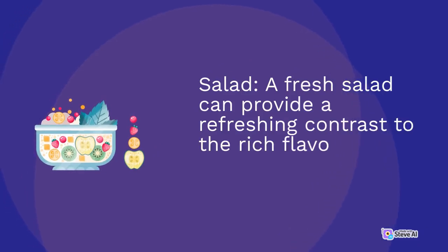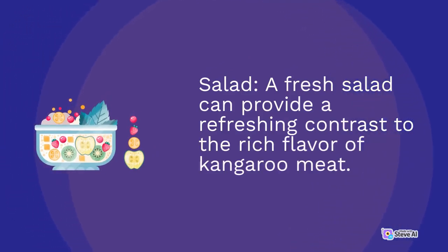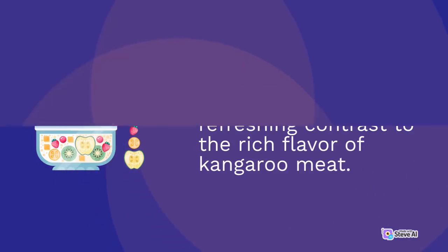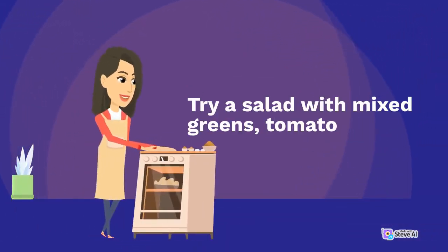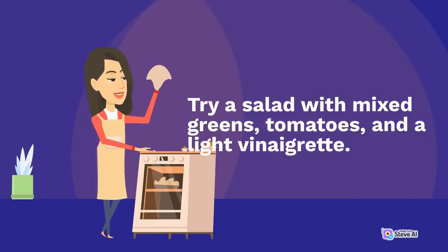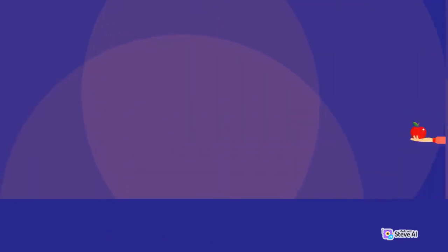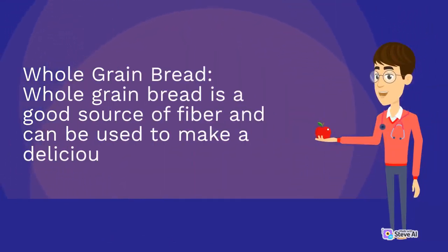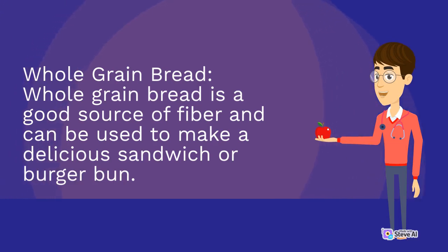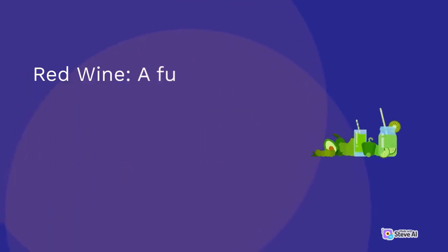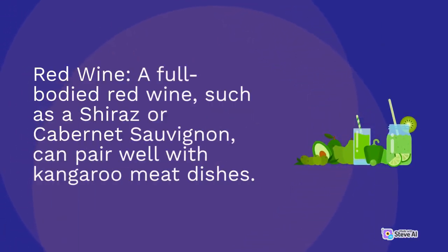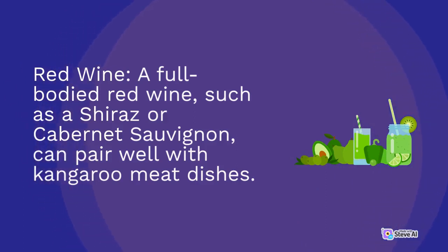A fresh salad can provide a refreshing contrast to the rich flavor of kangaroo meat — try a salad with mixed greens, tomatoes, and a light vinaigrette. Whole grain bread is a good source of fiber and can be used to make a delicious sandwich or burger bun. A full-bodied red wine, such as a Shiraz or Cabernet Sauvignon, can also pair well with kangaroo meat dishes.